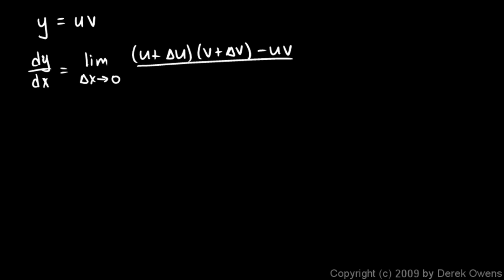So here's the proof. Y is equal to uv, and u and v are both differentiable functions of x. So dy dx, or y primed, however you want to say it, is going to be the limit as delta x approaches 0, of u plus delta u times v plus delta v minus uv, and all of that is over delta x.